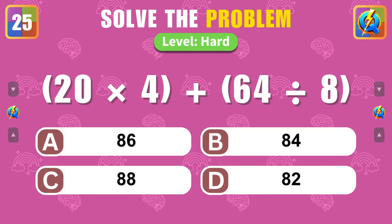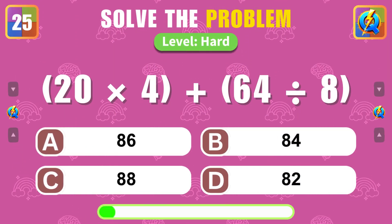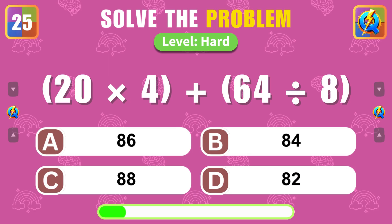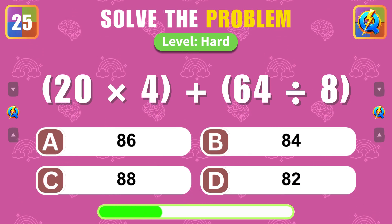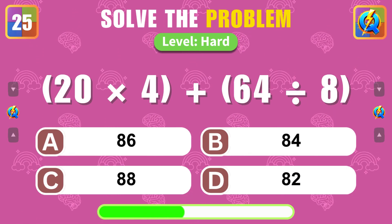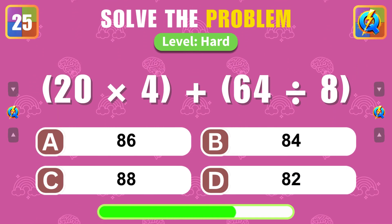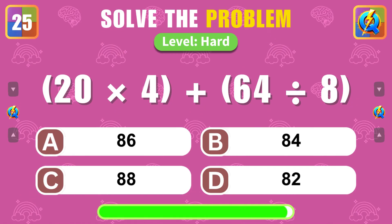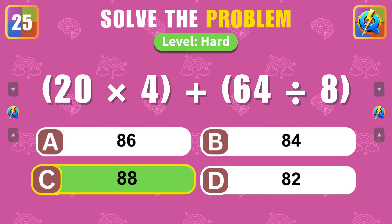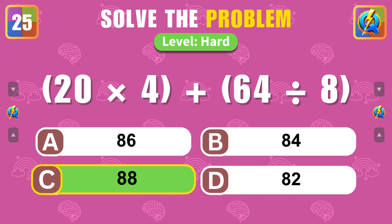What is the result of 20 times 4 plus 64 divided by 8? Bravo, the answer is 88.